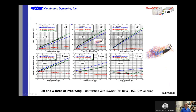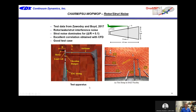Here's a correlation for two props in front of a wing — an important eVTOL configuration. The top shows the lift of the prop-wing configuration and the bottom shows the X-force, at angles of attack of 40, 60, and 80 degrees. The black is the test data and the green is the CHARM prediction, showing that if you have a props-in-front-of-wings configuration on your eVTOL aircraft, CHARM is going to be able to calculate the aeromechanics.